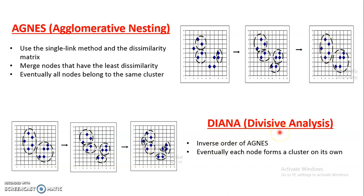The second approach is Diana, which is the reverse of Agnes — a top-down approach. We start from the top node and break down clusters into smaller parts based on dissimilarity. For example, if we have a cluster of five data objects where three are similar to each other and two are similar to each other, we divide that cluster into two sub-clusters: one of three objects and one of two objects. We do this to achieve higher accuracy, and the termination condition decides at which level we stop.